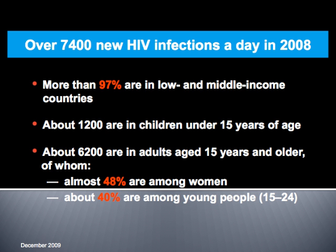More than 97% of new infections are in low- or middle-income countries. We have children and younger generation affected. Interestingly, 48% among women, about 40% among young people. Because of sexual preferences and behavior, this targets a young generation. It started with male homosexuals, but now it's prevalent everywhere. In Africa, you see both male and female equally impacted. But as we move to the Western world, you see more males — linked to MSM, homosexuality practiced among males.